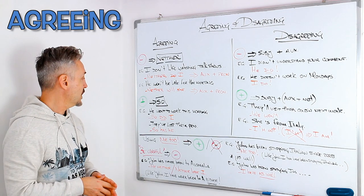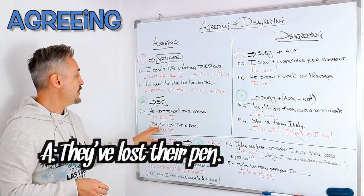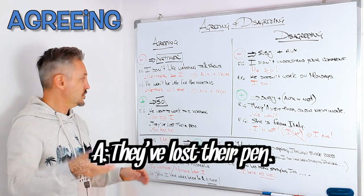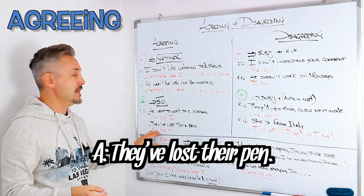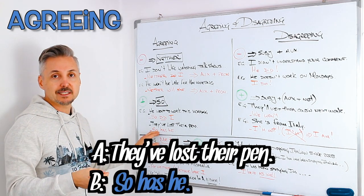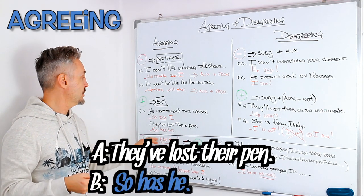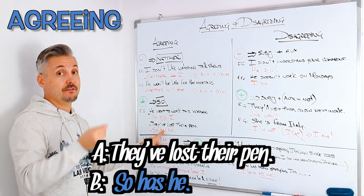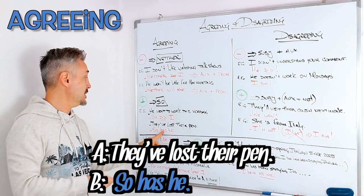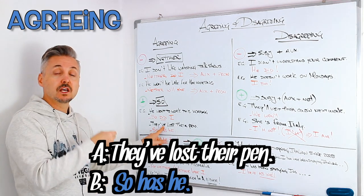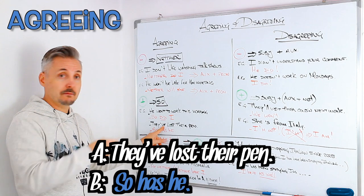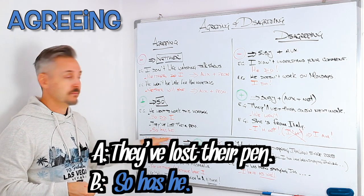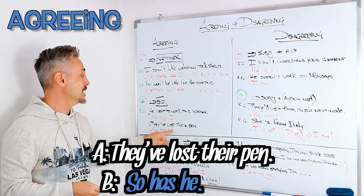Another example: 'They've lost their pen.' I would say 'So has he.' That's so + the auxiliary of the present perfect, which is 'has' — 'so has he.'